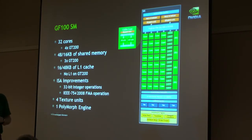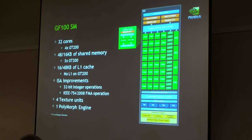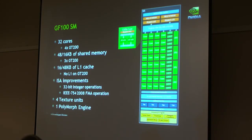We've improved the instruction set. There are a lot more throughput integer operations — in fact, a lot of them go up to four times faster per core than our previous generation. We have this FMA operation, which is IEEE 754-2008 compliant. FMA stands for fused multiply-add. It has more bits of precision in the intermediate from doing the multiply and add together than you actually have coming out — you don't do the rounding between the multiply and the add. Four texture units per SM, and one polymorph engine.